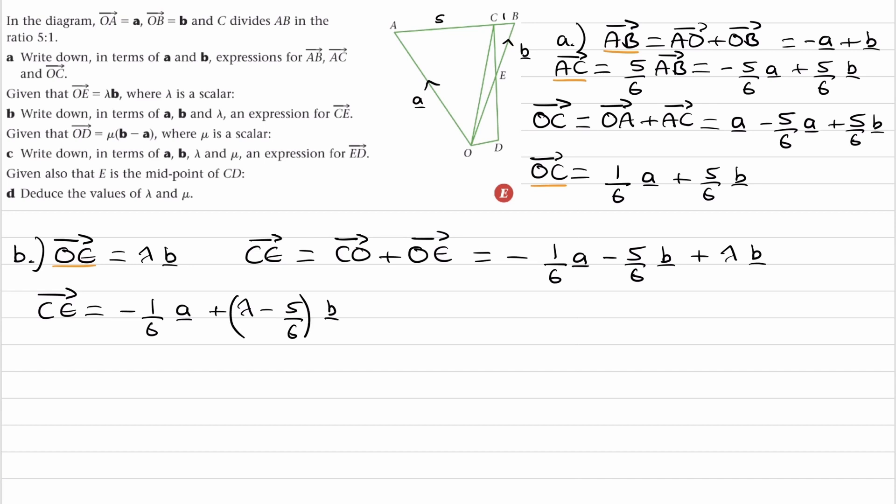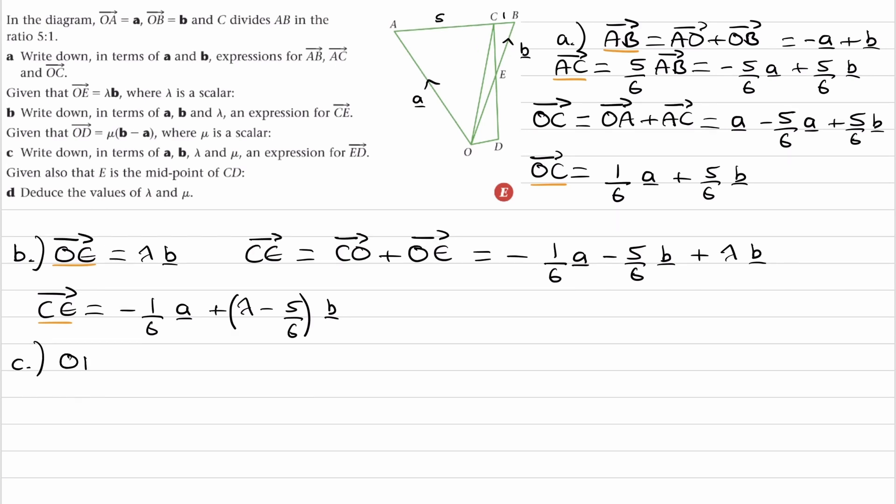And that is CE. I'm just underlining the unique vectors in orange, so it's a bit easier to refer to them later. So for part C, we're told that OD is equal to mu b minus mu a, and we're trying to work out an expression for ED in terms of AB, lambda, and mu.